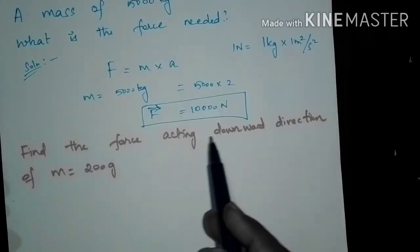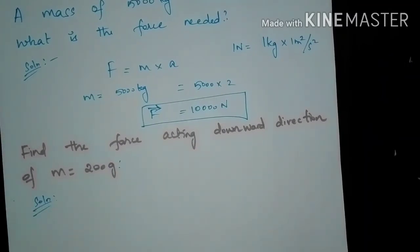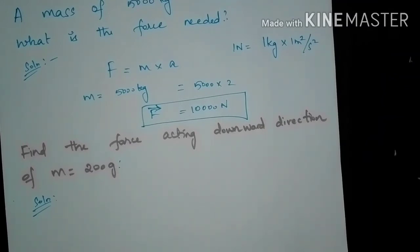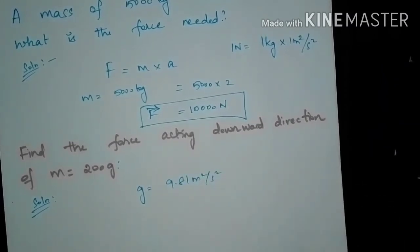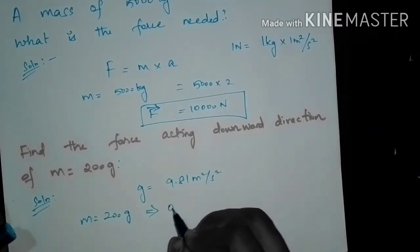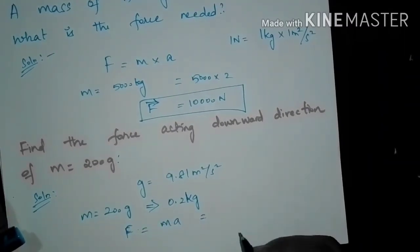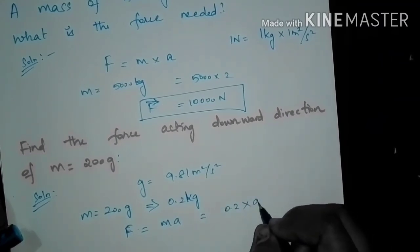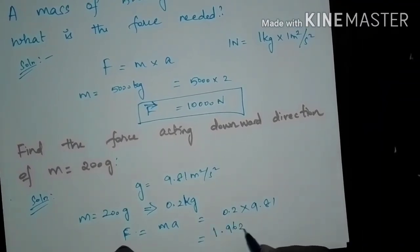In this problem, find the force acting in the downward direction on a mass m = 200 grams. The acceleration value is not given, so since the force acts downward due to gravity, we use g = 9.81 m/s². Convert 200 grams to 0.2 kilograms. Using F = m × a: force = 0.2 × 9.81 = 1.962 Newtons.